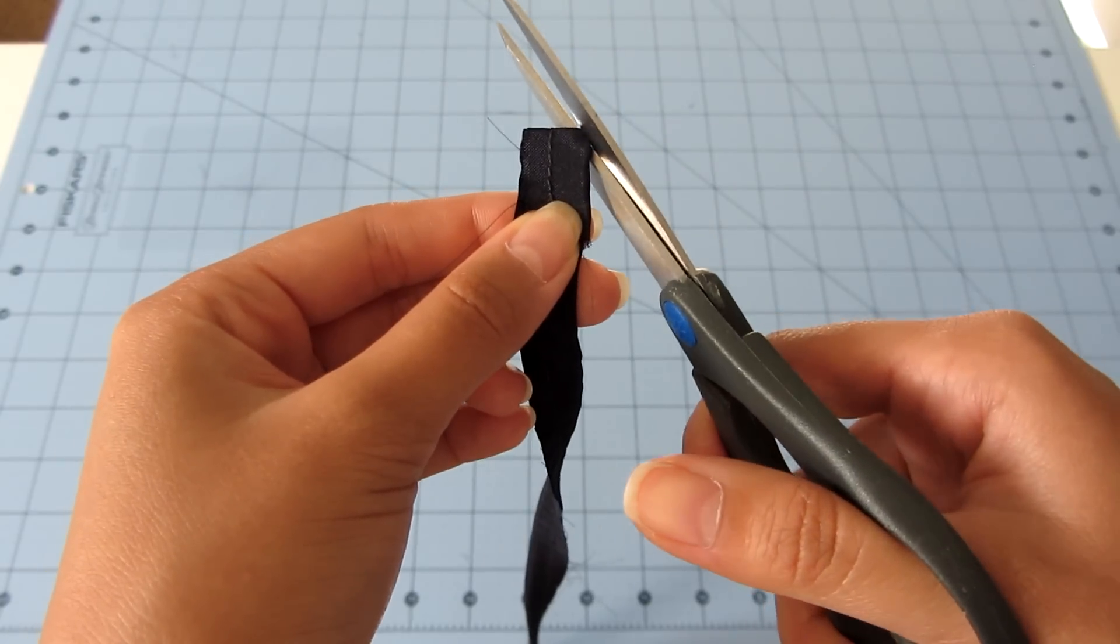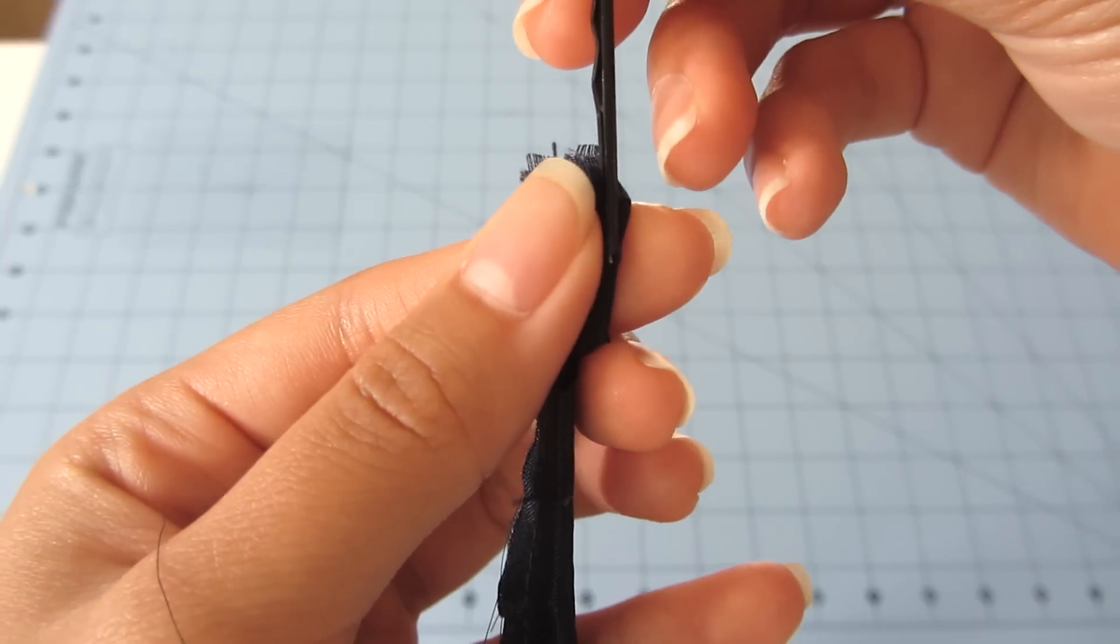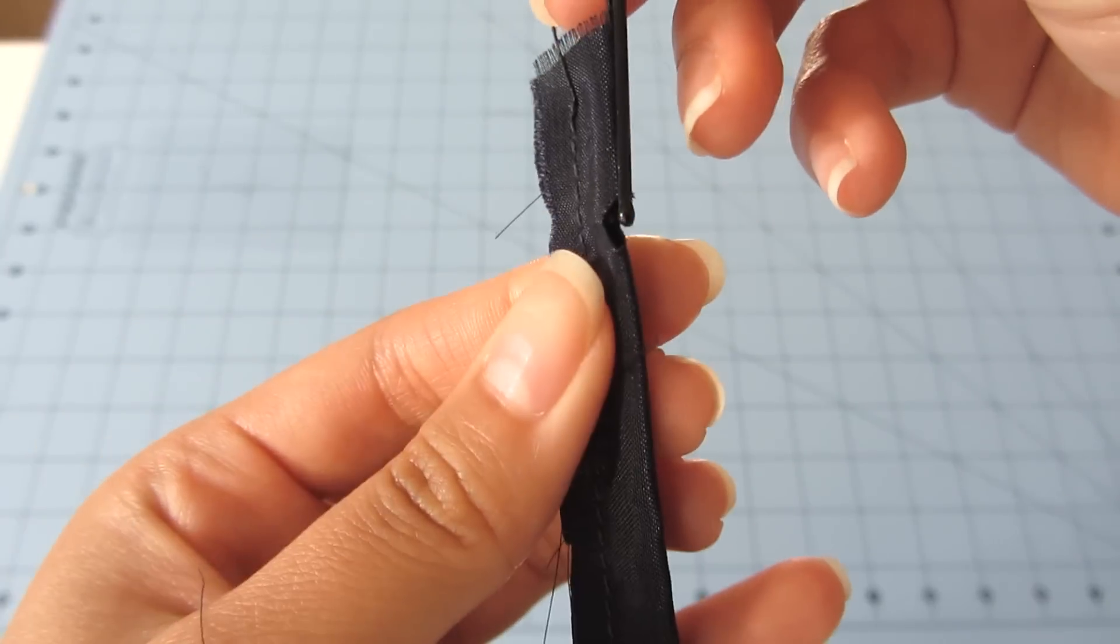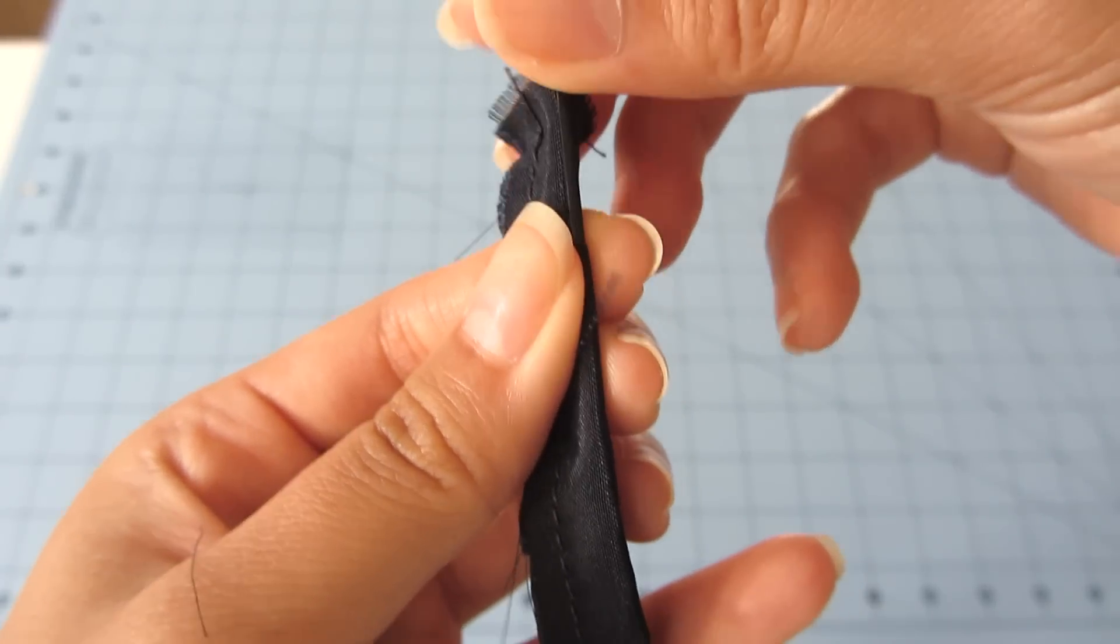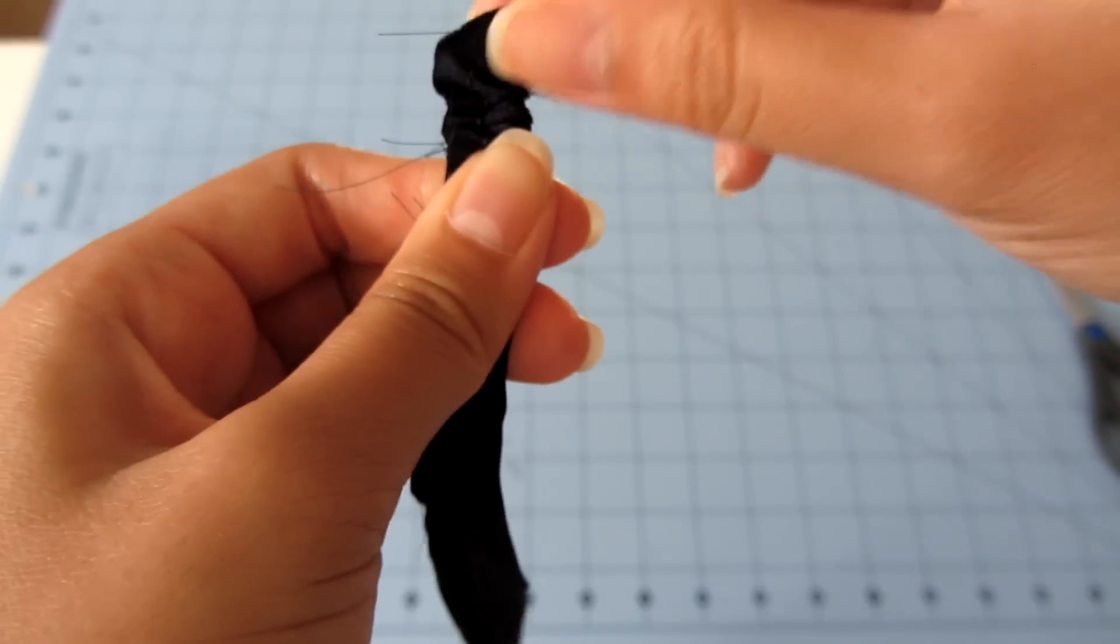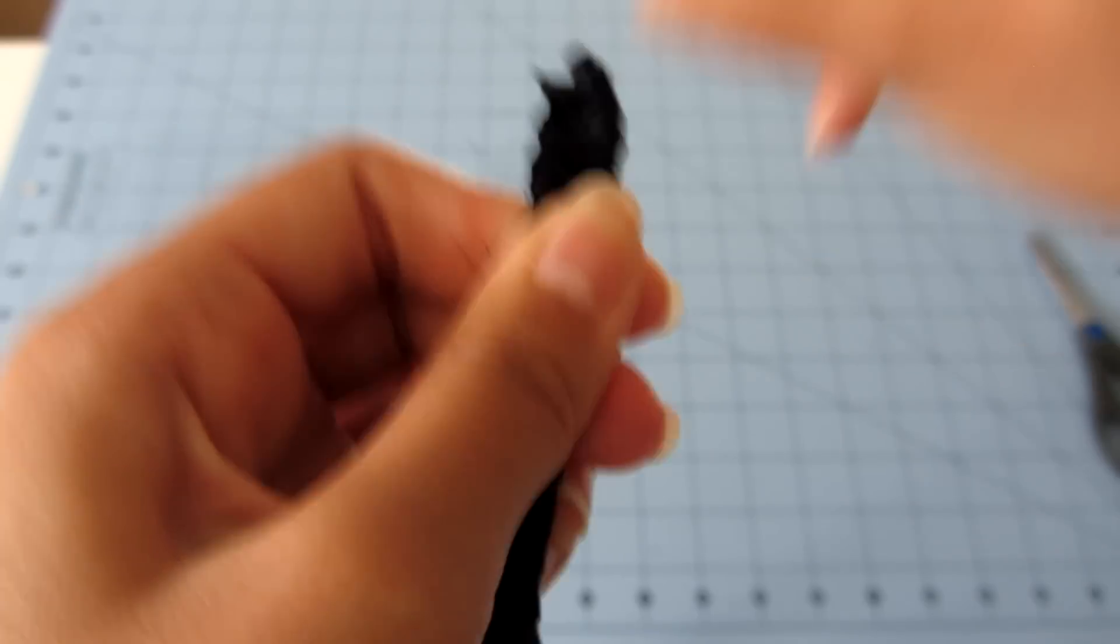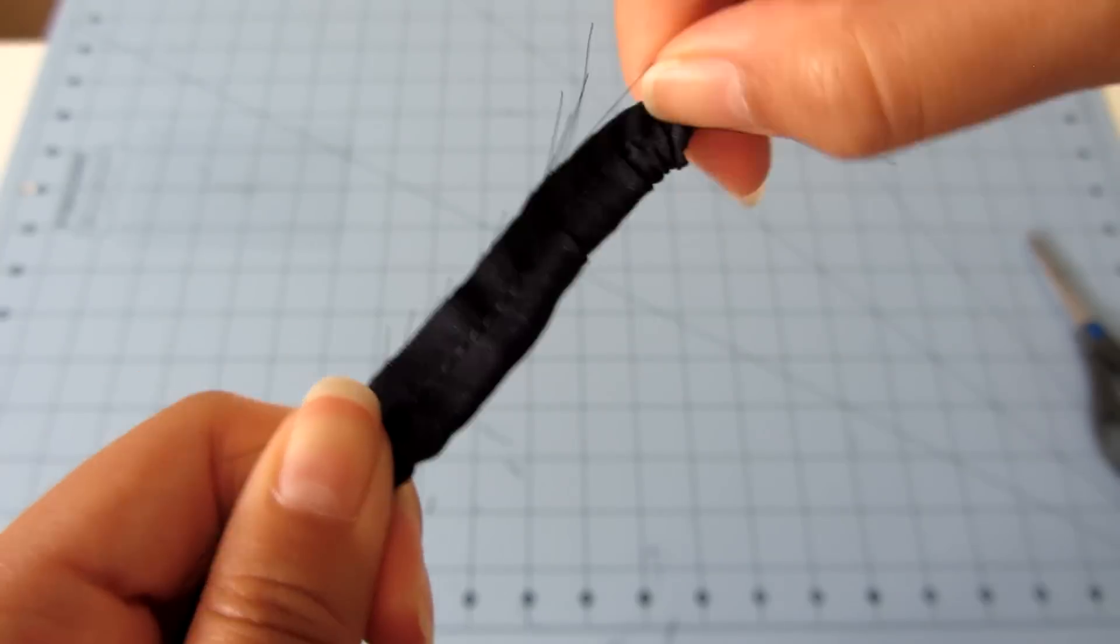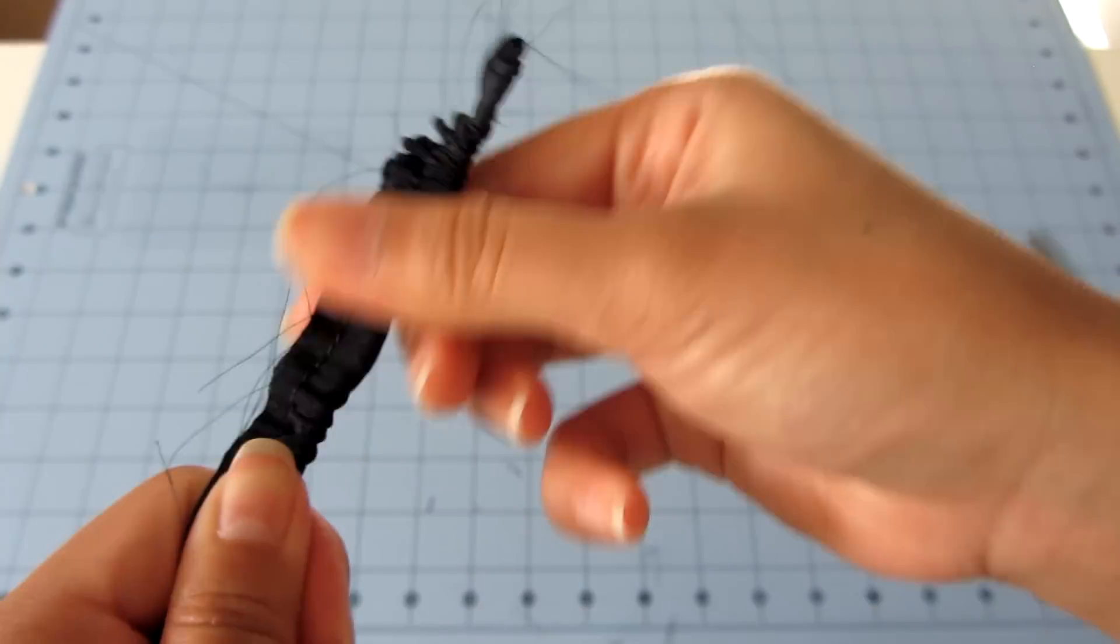Then insert a bobby pin with the wavy side on the inside and then insert the straight side through the hole, like what I'm doing here. Then start pulling the fabric over the pin and feeding the pin through the tube until you reach the other side.